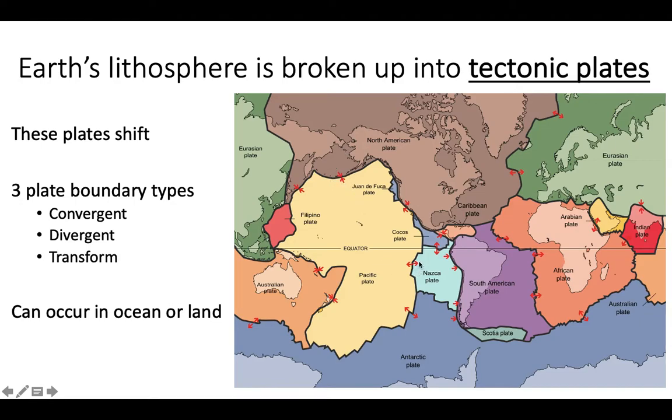There are divergent boundaries, where the two plates are spreading apart, like you can see here. And there are transform boundaries, where two plates slide past each other, which you can see here. And these plate boundaries can be in the ocean, or they can occur on land.